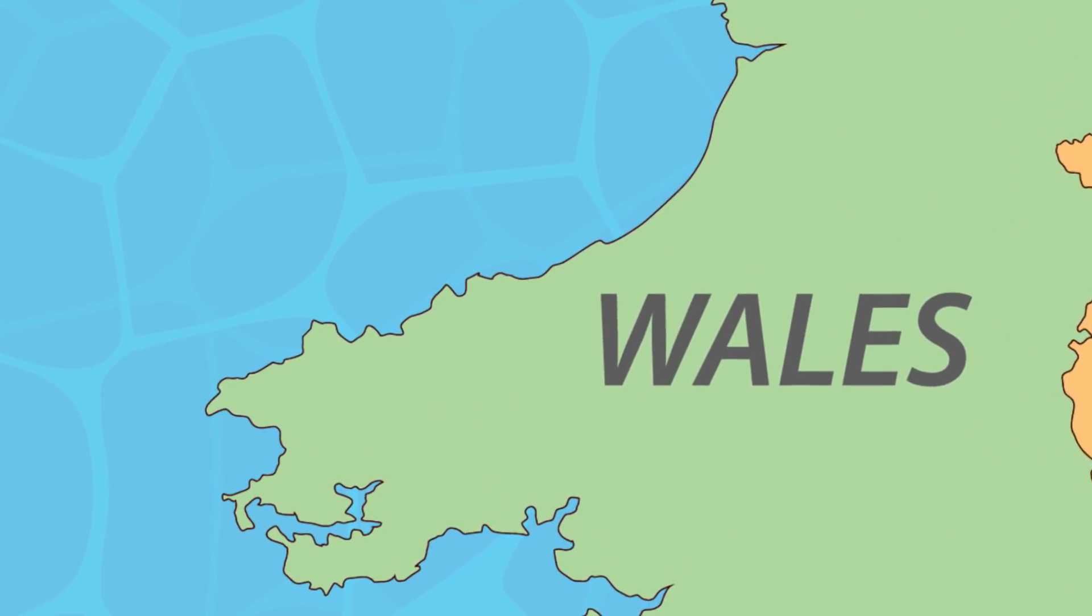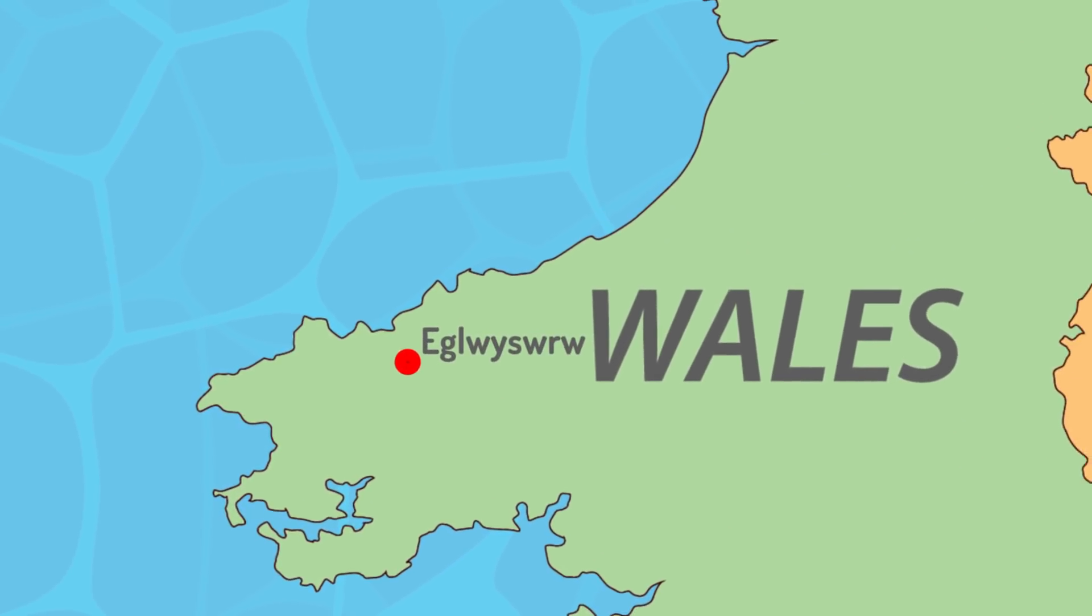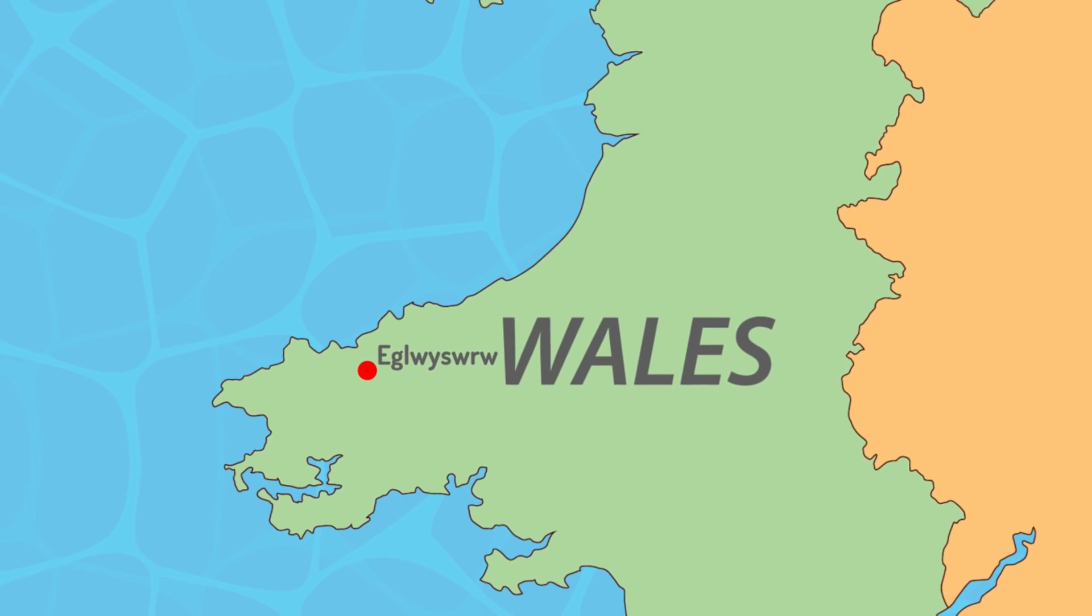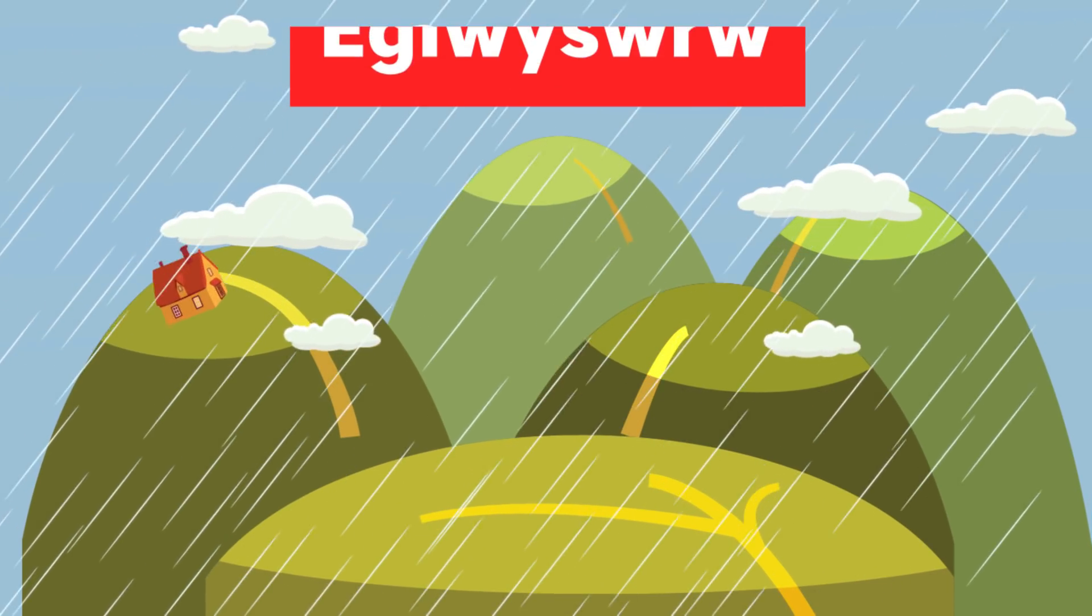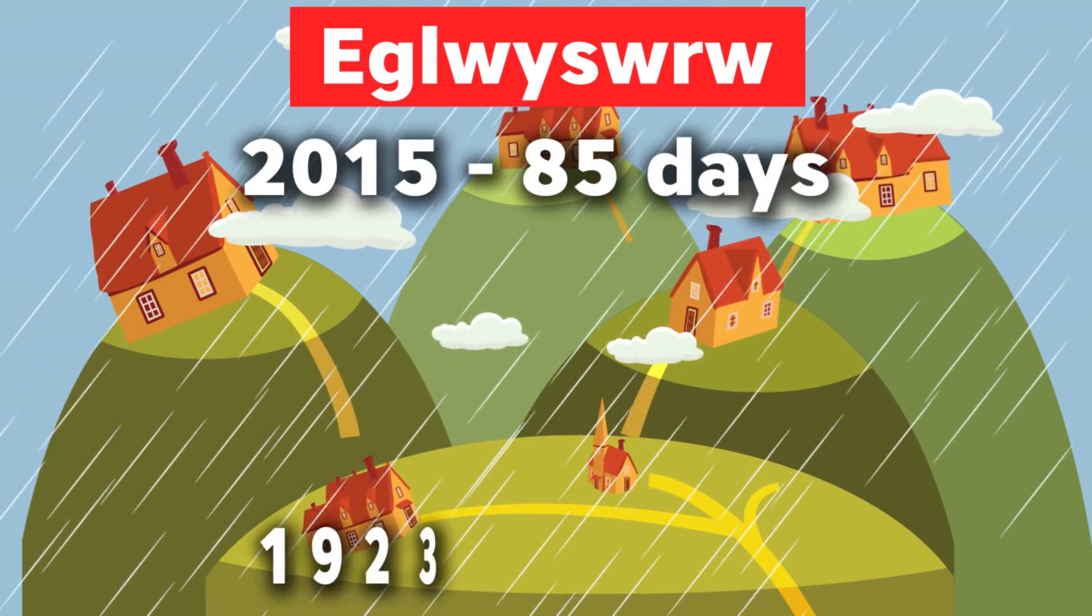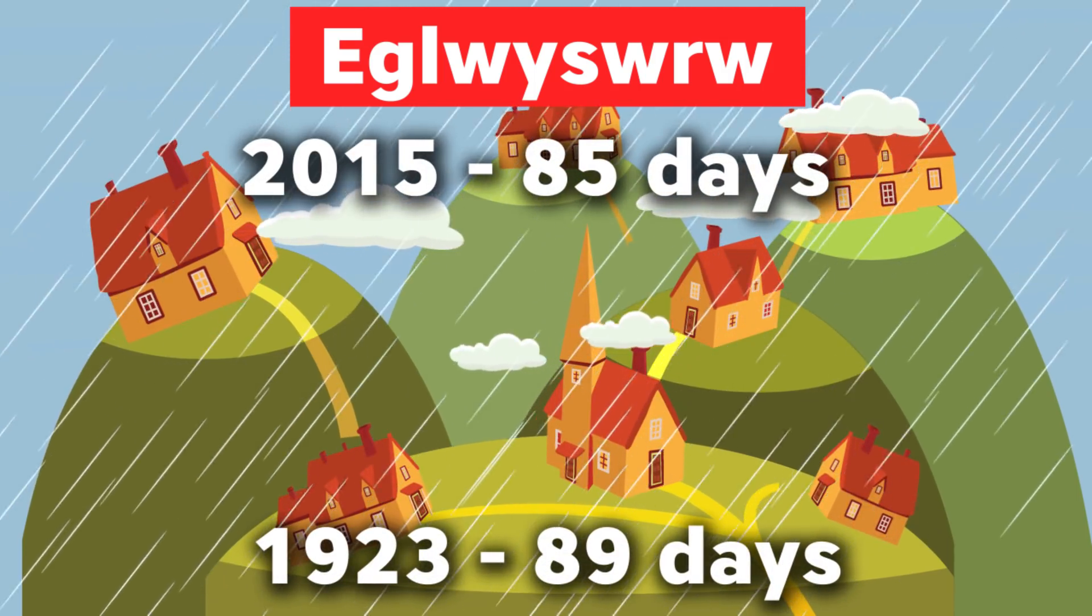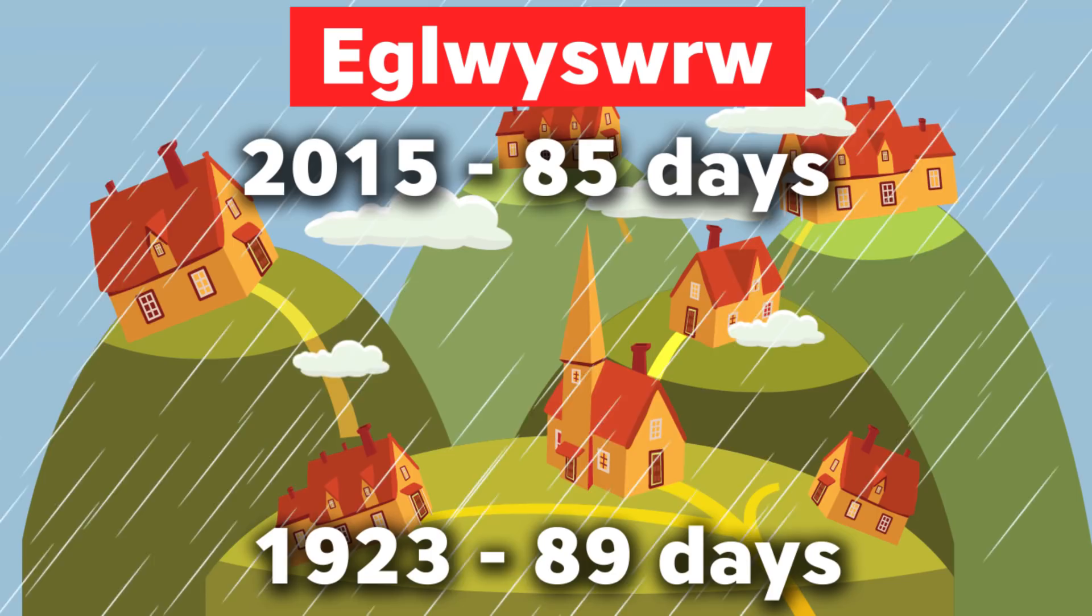There is a real place called Iglesauro in Wales. This village is as long on rain as it's short on vowels. In 2015, it rained for 85 days in a row, just missing out on setting the British record which was 89 days in Scotland in 1923.